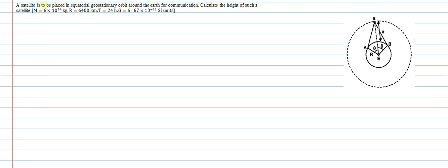Hello students, we'll understand this question now. A satellite is to be placed in equatorial geostationary orbit around the earth for communication.